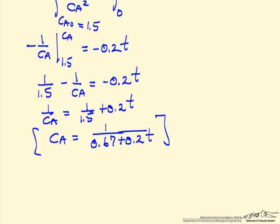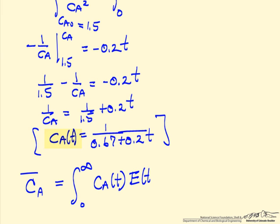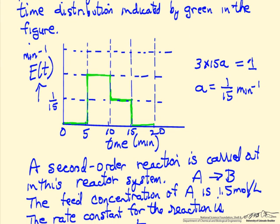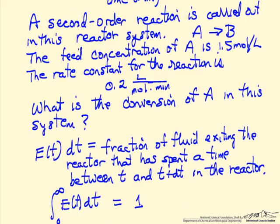Now we use the residence time distribution with segregated flow to calculate the average concentration leaving the reactor. In general, we integrate over all times the concentration of A as a function of time, times the residence time distribution — how long each of those little batch reactors has to react. Looking back at the plot, E of t is zero everywhere except from 5 to 10 and 10 to 15 minutes: its value is 2/15 from 5 to 10, and 1/15 from 10 to 15.